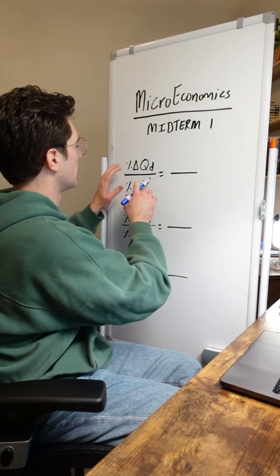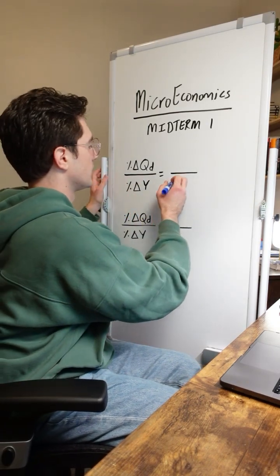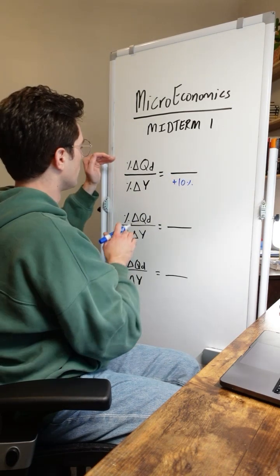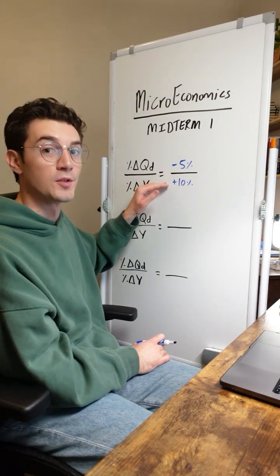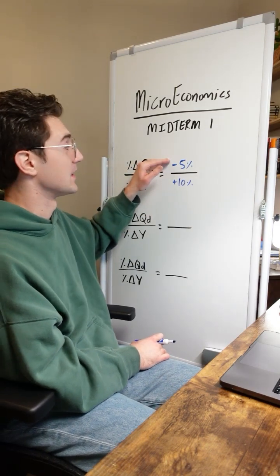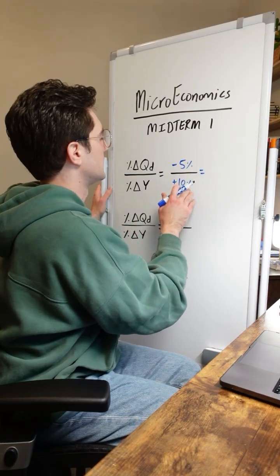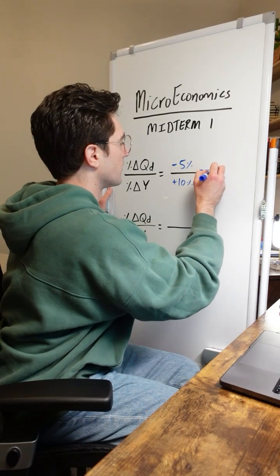So let's start with this good right here. Let's say that when income for consumers increases by 10%, the quantity demanded of a given good decreases by 5%. This is interesting. So consumers now have more money, but they're buying less of the good. This results in an income elasticity of demand value of negative 0.5.